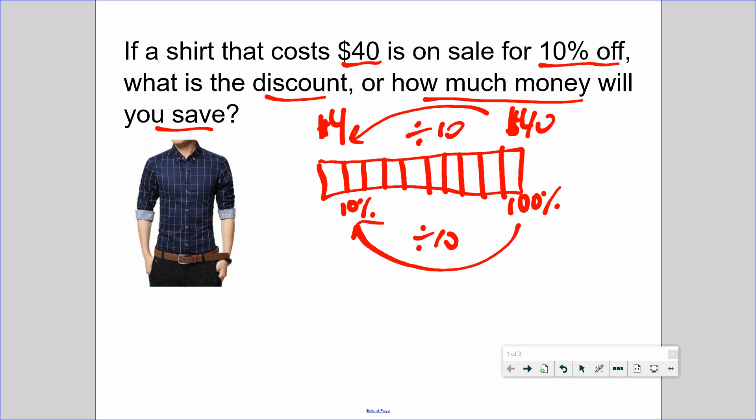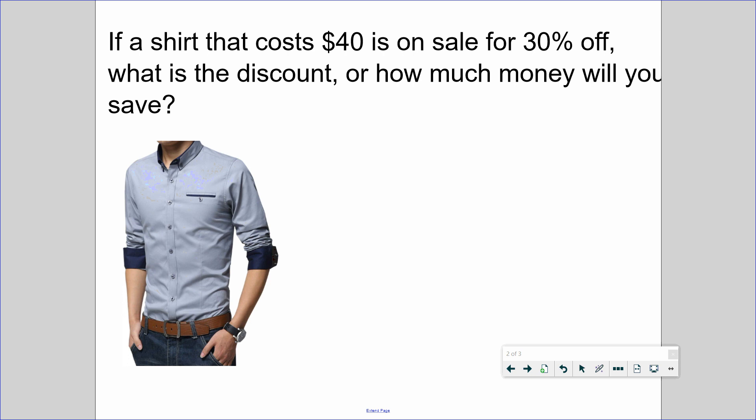Next one: a shirt that costs $40 is on sale for 30% off. What is the discount, or how much money will you save? So here's another shirt. Here's a percent bar. This represents zero percent, this represents 100%. So we need to find 30%.